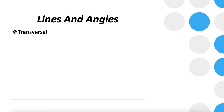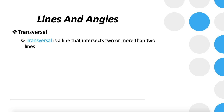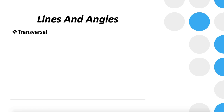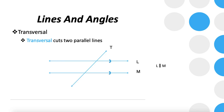Now let's talk about the transversal. A transversal is a line that intersects two or more lines. If we have two parallel lines L and M, a transversal T cuts them at two points. At each point there are four angles, so across both intersection points there will be eight angles total.